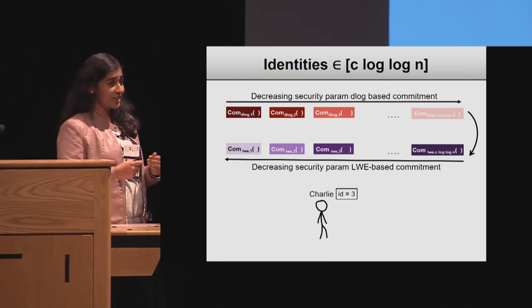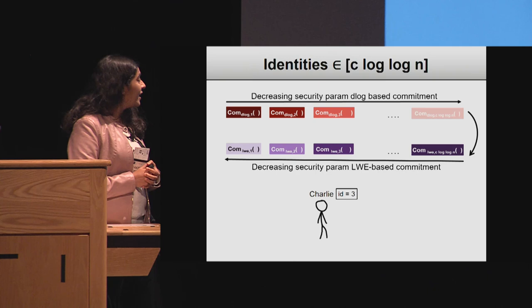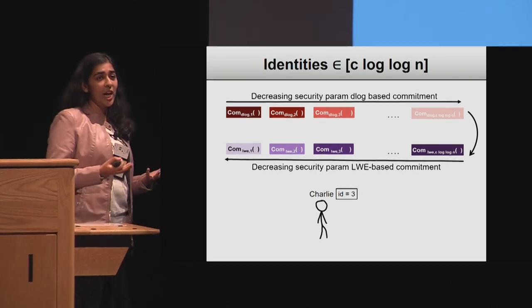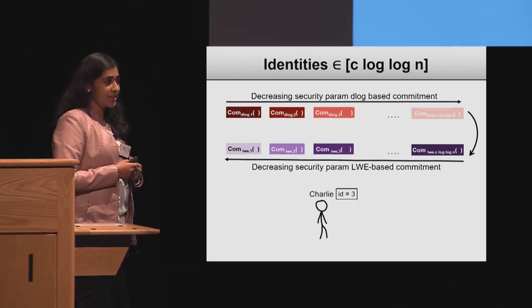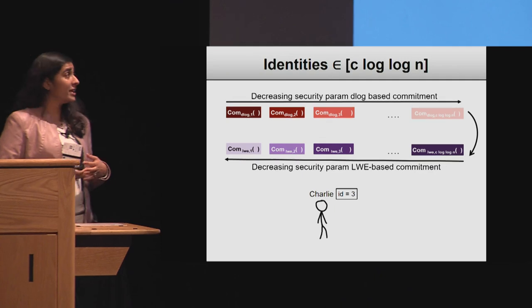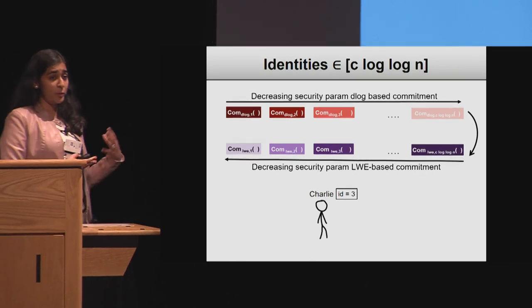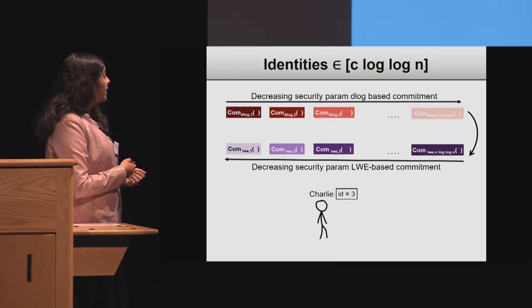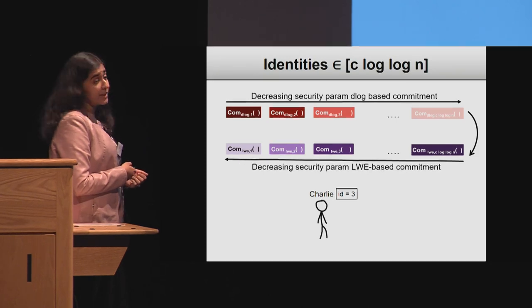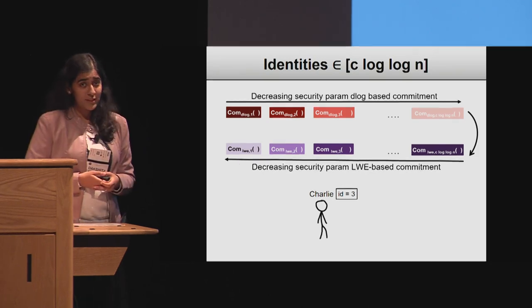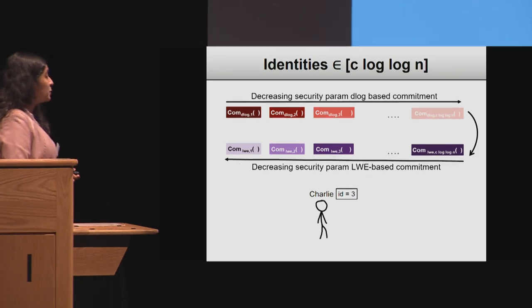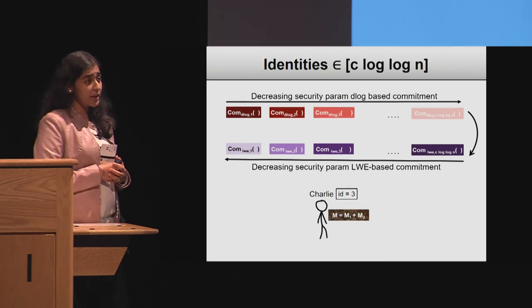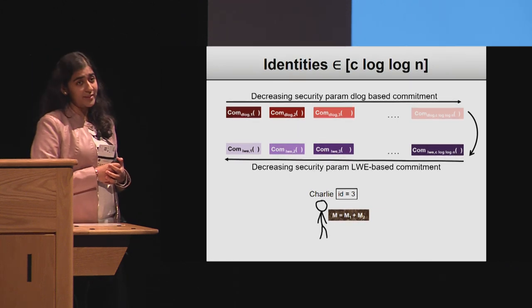Let's say Charlie has identity three. He will look at both commitments corresponding to identity three in the sequence — one is the discrete-log-based commitment, and the other is the LWE-based commitment. He will split his message into two parts using a two-out-of-two secret sharing scheme, committing the first part with the discrete-log-based commitment and the second part with the LWE-based commitment with identity three.